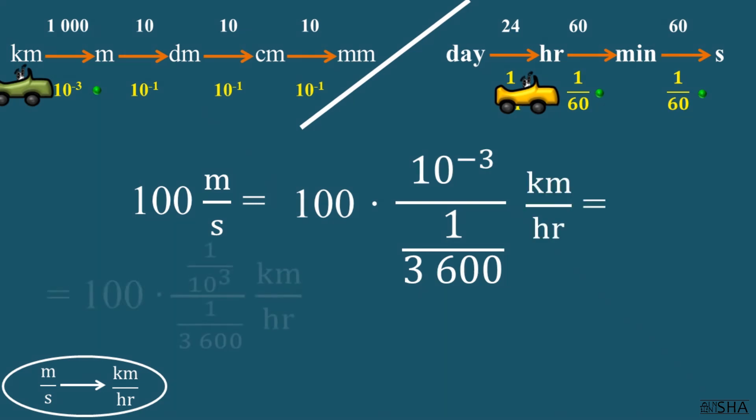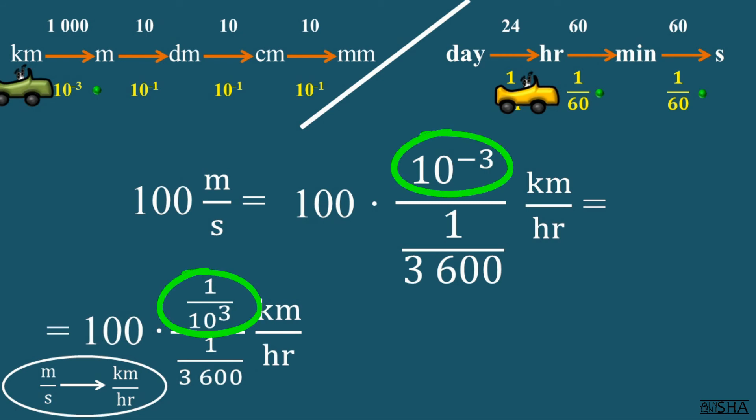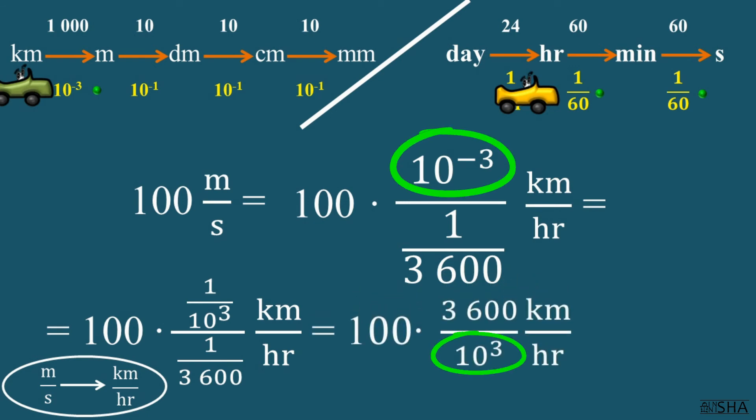Now we need to do something with our fraction. We definitely need some math here. 10 to the negative third power is 1 over 10 to the third power. Therefore, 10 to the negative third power goes from the numerator to the denominator, but already with a positive exponent. 3600 goes straight to the numerator.